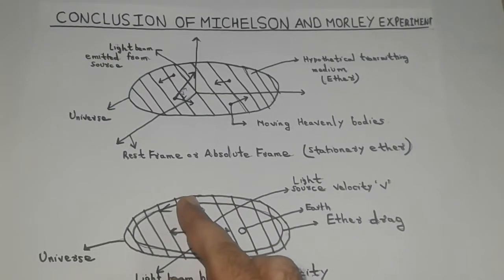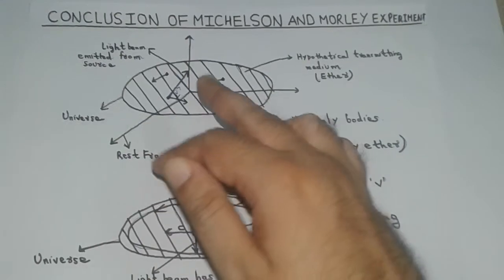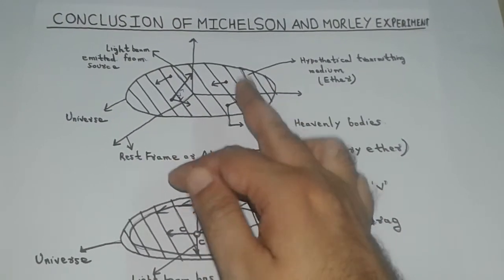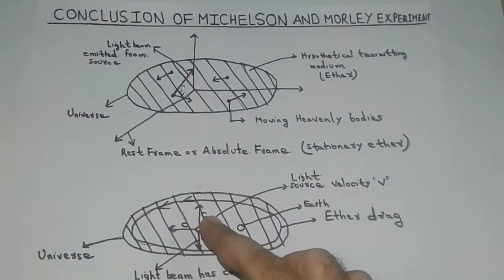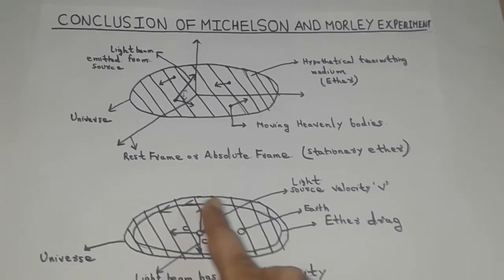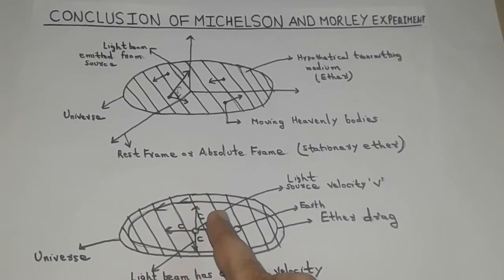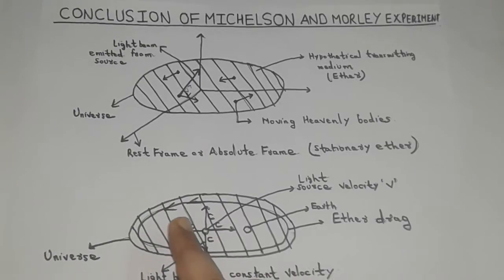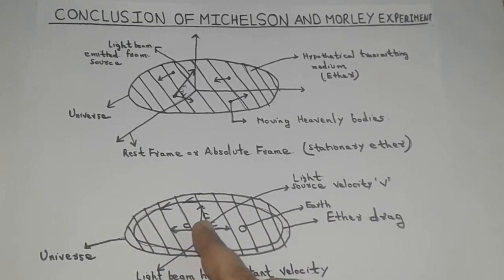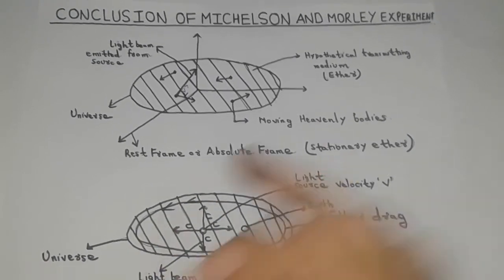The velocity of light can only be added with the velocity of source if ether was assumed to be stationary as was the case before Michelson and Morley experiment was performed. But after Michelson and Morley experiment, it confirmed that the velocity of light is constant in all directions in space and is independent of the direction of velocity of source. Hence, velocity of light cannot be added with the velocity of source.